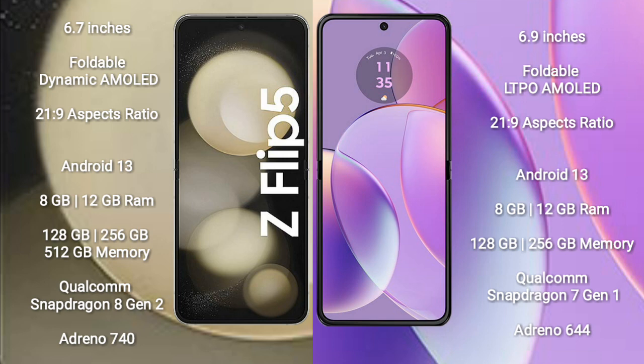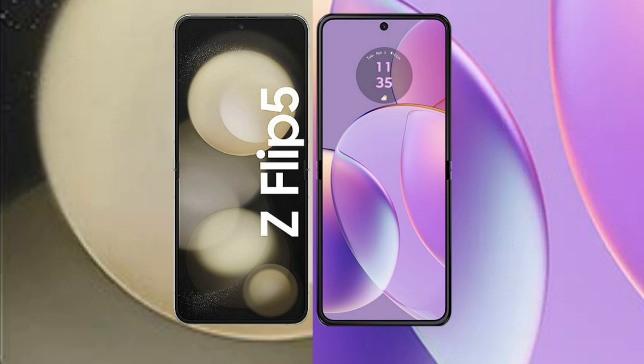Samsung Galaxy Z Flip 5 comes with 8GB or 12GB RAM and 128GB to 256GB internal storage, powered by a Qualcomm Snapdragon 8 Gen 2 processor with Adreno 740 GPU. Motorola Razr 40 comes with 8GB or 12GB RAM and 128GB to 256GB internal storage, powered by a Qualcomm Snapdragon 7 Gen 1 processor with Adreno 644 GPU.